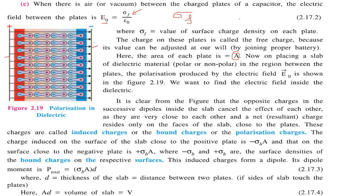On placing a slab of dielectric material (polar or non-polar) between the plates in the region with field E₀, the opposite charges in successive dipoles inside the slab cancel each other's effect. The net or resultant charge resides only on the faces of the slab close to the plates. These charges are called induced charges, bound charges, or polarization charges. The charge induced on the surface close to the positive plate is −σ_B × A, and close to the negative plate is +σ_B × A, where σ_B is the surface density of bound charges.